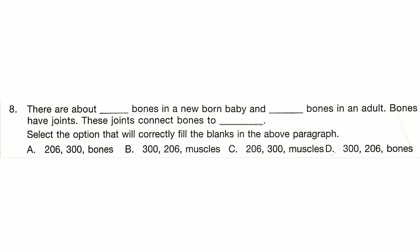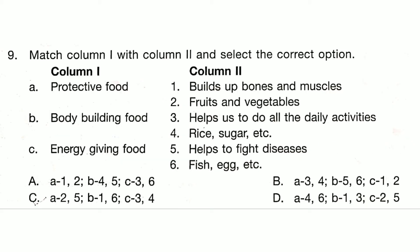There are about 300 bones in a newborn baby and 206 bones in an adult. Bones have joints. These joints connect bones. Answer is Option D.